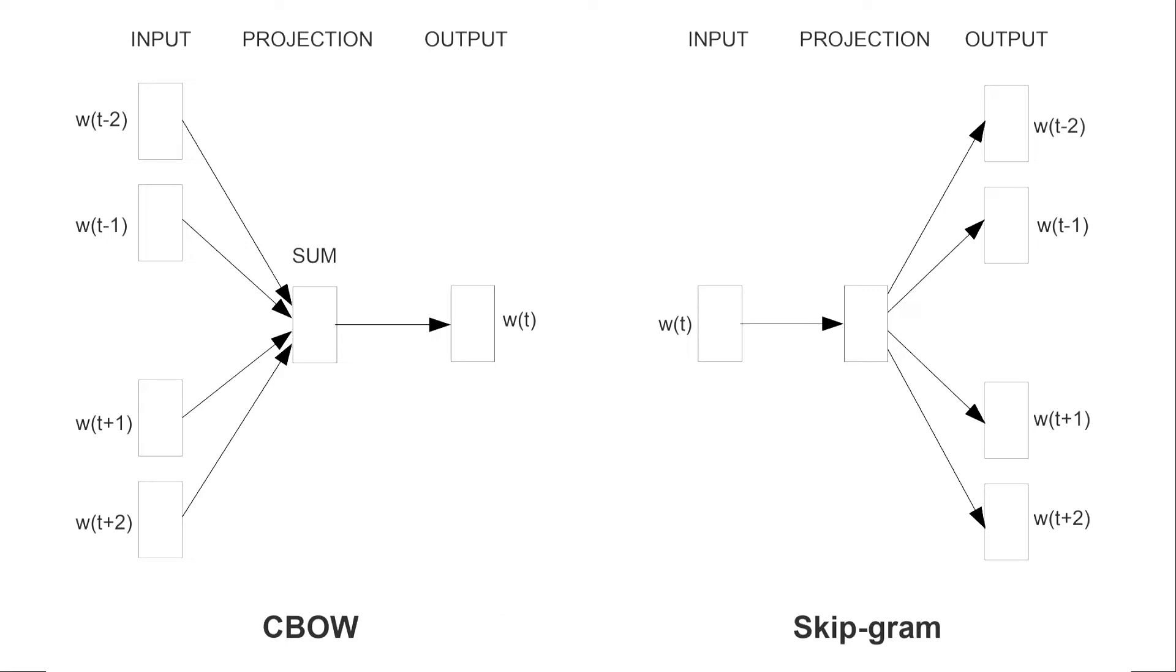Word2vec is a statistical method for efficiently learning a standalone word embedding from a text corpus. Two different learning models were introduced that can be used as part of the word2vec approach to learn the word embedding, and they are CBOW and SkipGram.